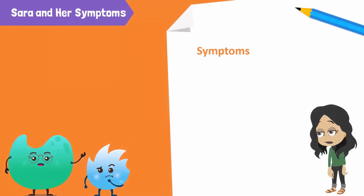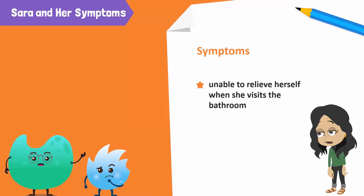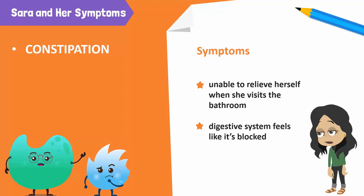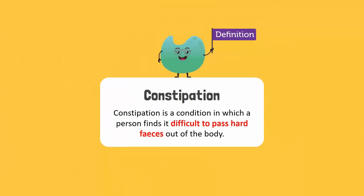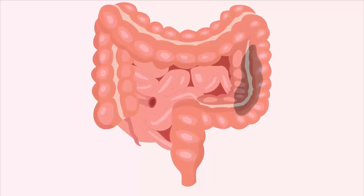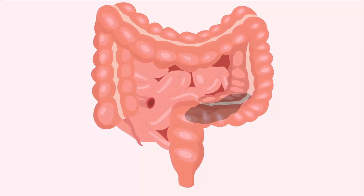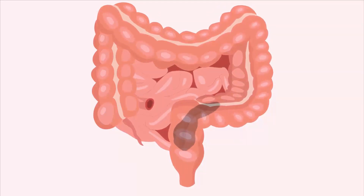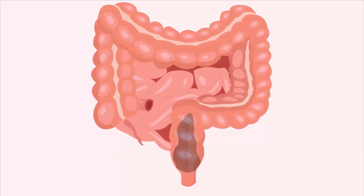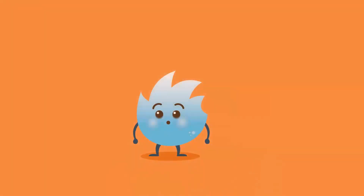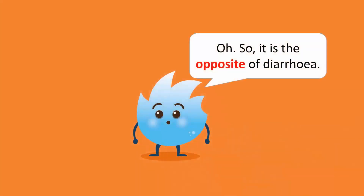Let's look at Sara's disorder. She complained that she is unable to relieve herself when she goes to the bathroom. She feels like her digestive system is blocked. Sara has constipation. Constipation is a condition in which a person finds it difficult to pass hard feces out of the body. It occurs when waste or stools move too slowly through the digestive tract. More water and salts are absorbed from the stool, causing it to become hard and dry. So it is the opposite of diarrhea.